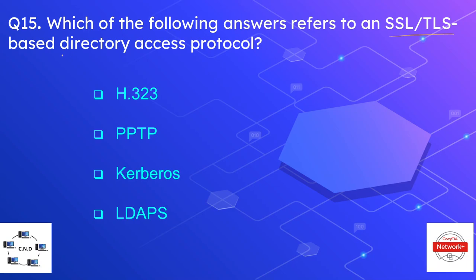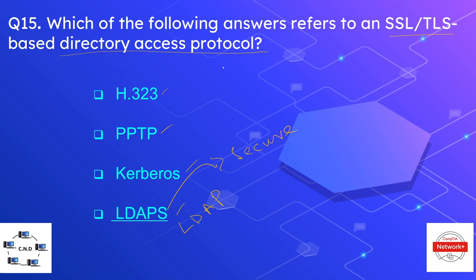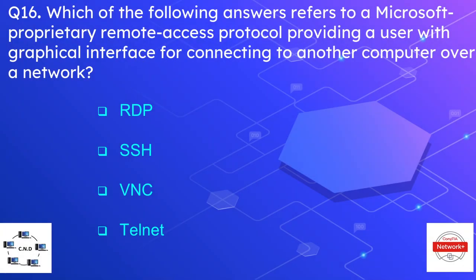Question number fifteen is: which of the following answers refers to an SSL and TLS based directory access protocol? The options are H.323, PPTP, Kerberos, or LDAPS. The correct option is LDAPS — where 'S' stands for secure — the secure version of LDAP providing SSL and TLS based encryption for the directory access protocol.